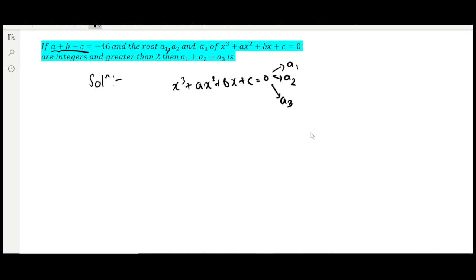We are also given that a + b + c equals -46, and these roots are integers greater than 2. All are integers and they are greater than 2.